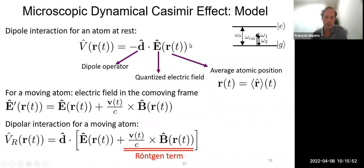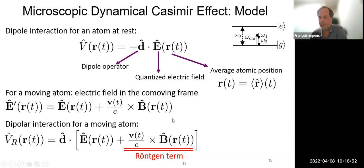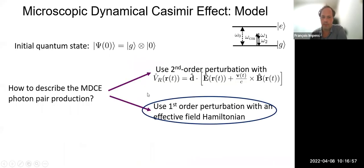We use a simple dipolar interaction: the dipolar operator for the atom coupled to the quantized electric field evaluated at the atomic position. But for a moving atom, you need to replace the electric field by the Lorentz-transformed field in the co-moving frame. Taking the leading non-relativistic order, you obtain the dipolar interaction for a moving atom, with an additional term coupled to the quantized magnetic field — the Röntgen term. This term is important to take into account if you want to see which photons are emitted.